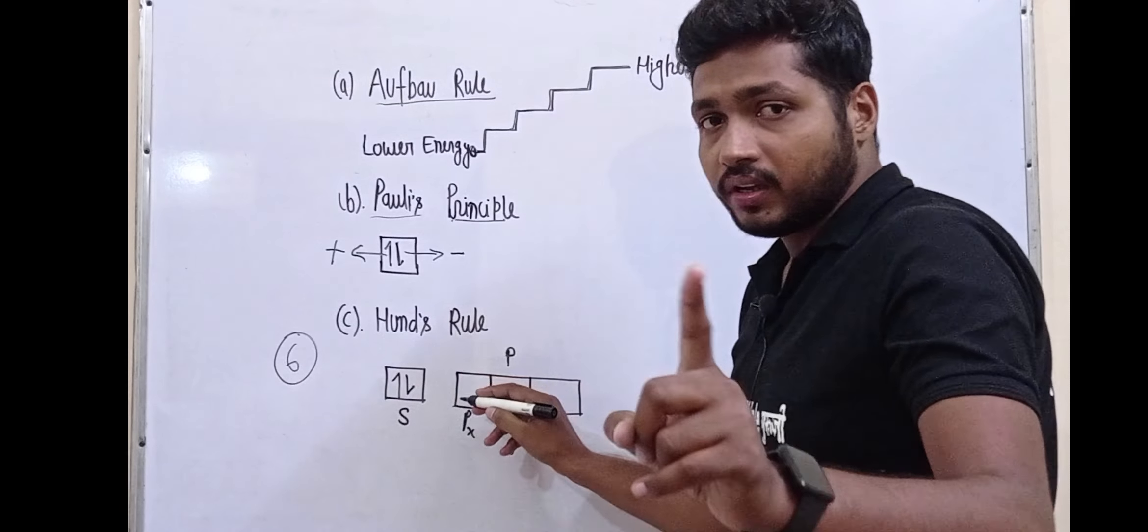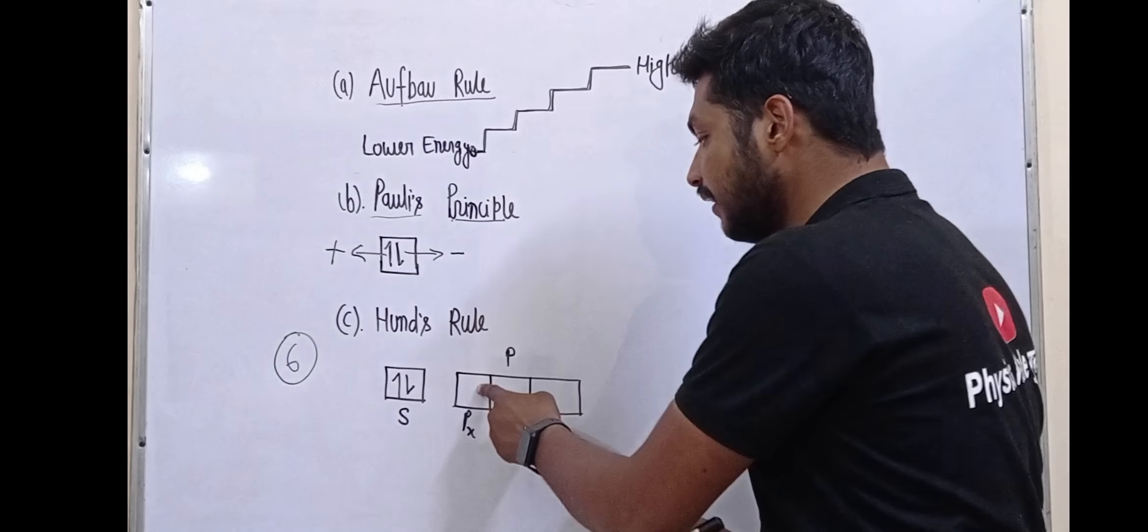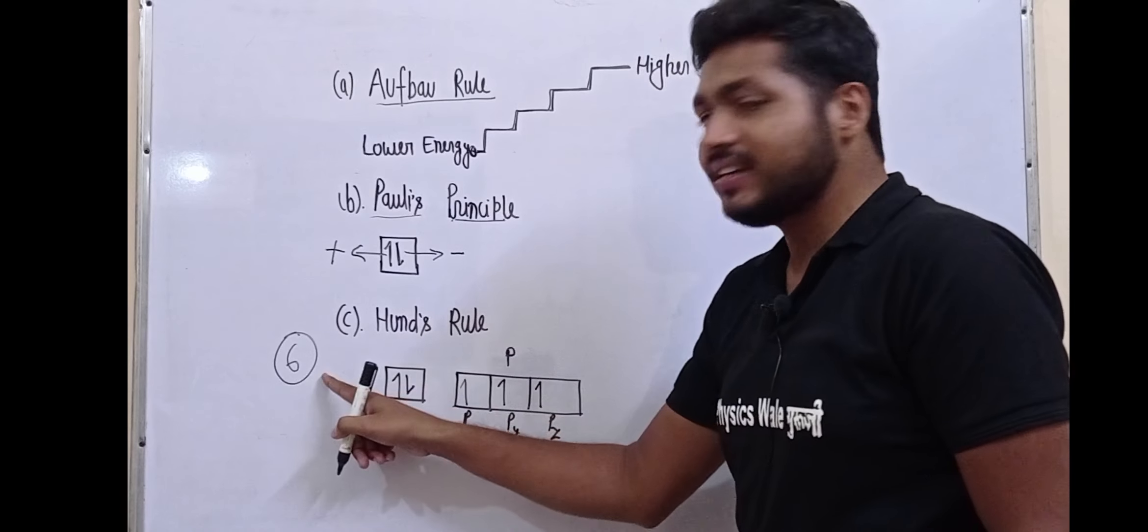For six electrons, the S orbital gets two electrons with opposite spins. For the P orbitals, we fill single electrons in each orbital first - PX, PY, and PZ - that's one, two, and three. One electron remains, then pairing will occur.